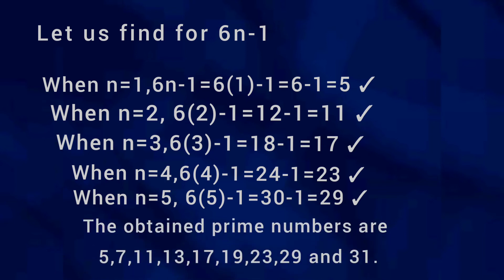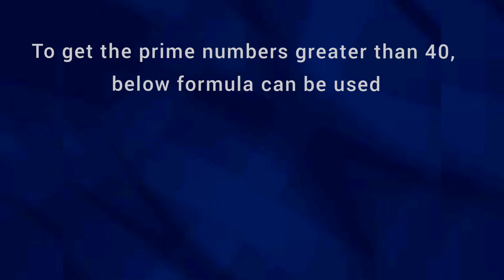The obtained prime numbers are 5, 7, 11, 13, 17, 19, 23, 29, and 31. Similarly, you can find prime numbers between 1 to 100 or 1 to 200 by increasing the values of n.